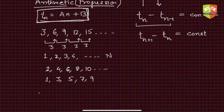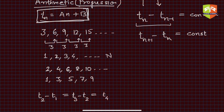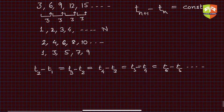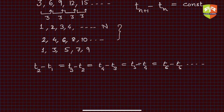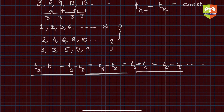Generalizing, we can say that t2 − t1 = t3 − t2 = t4 − t3 = t5 − t4 = t6 − t5, and so on. You can verify this for all these sequences — the difference between subsequent terms is constant. For example, for natural numbers it is 1; for even numbers it is 2; for odd numbers it is also 2; and for multiples of 3 it was 3.